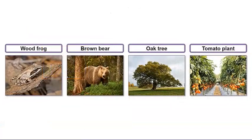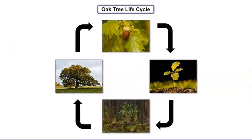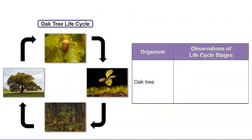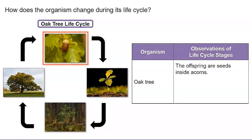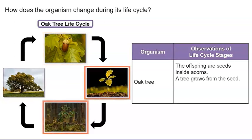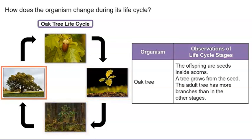Now, let's observe the life cycle of an oak tree. What do you observe about the organism at each stage? Let's record some of our observations in this chart. How does the organism change during its life cycle? The offspring are seeds inside acorns. A tree grows from the seed. The adult tree has more branches than in the other stages.